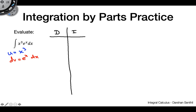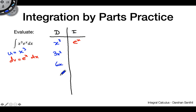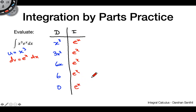Now we set up our DI table, putting x cubed in the D column and e to the x in the I column. We take derivatives of the D column until we get zero: x cubed, 3x squared, 6x, 6, 0. Since e to the x is its own integral, we fill the entire I column with e to the x.